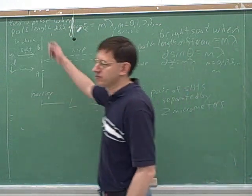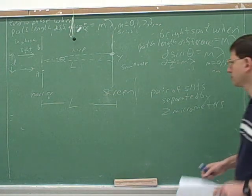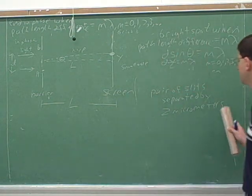So oftentimes the slits are very close. You have very small distances. Okay, good. So that's a way they could give you D.